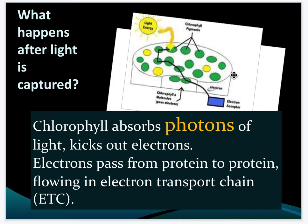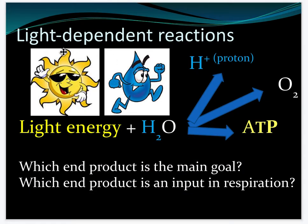So what happens to light after it's captured? After it's captured, the photons — which are particles of light — knock out electrons, and those electrons pass from protein to protein through something called the electron transport chain. They move down this chain and slowly create more and more energy along the way. Light-dependent reactions use light and water to make protons, hydrogens, oxygen, and ATP.